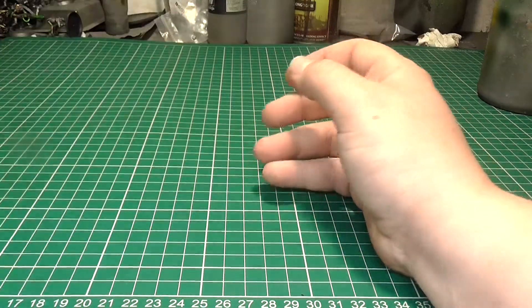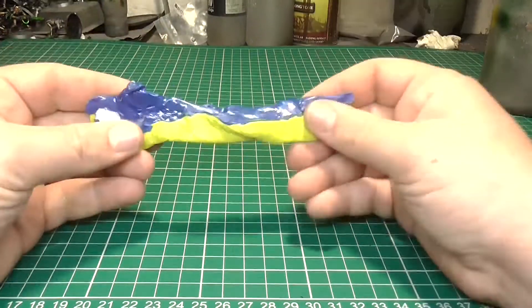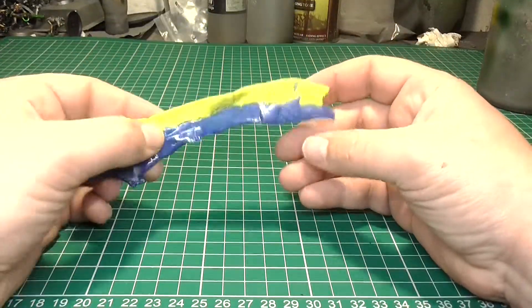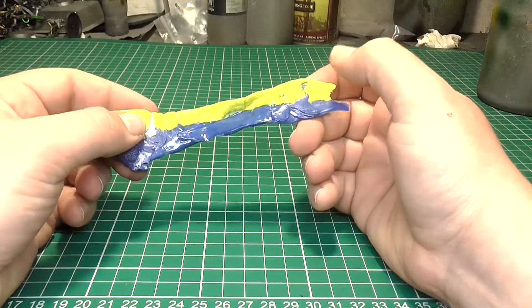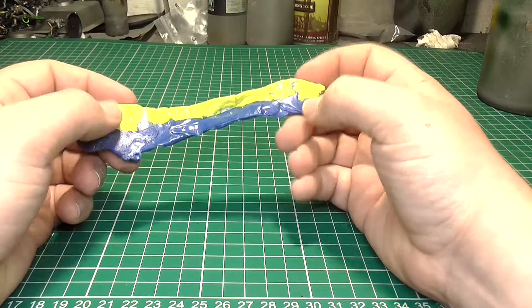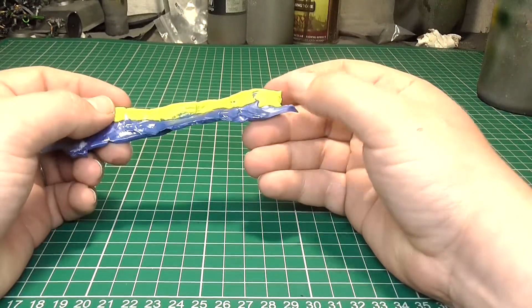We're going to be talking about green stuff. So, green stuff is this substance right here. It is an epoxy putty, which basically means that you have to mix it. It's got a yellow and a blue part. You mix it together, and it goes green, hence the name, green stuff.